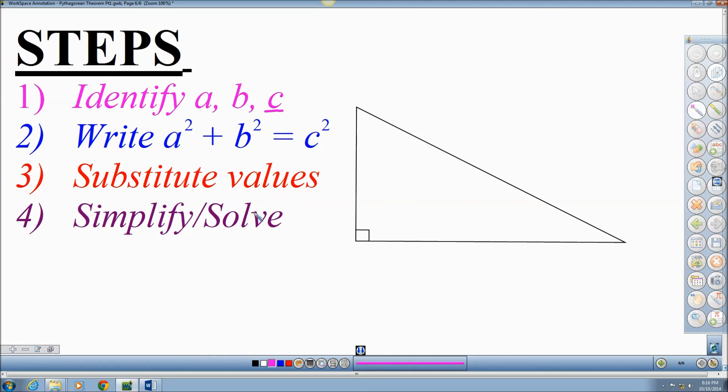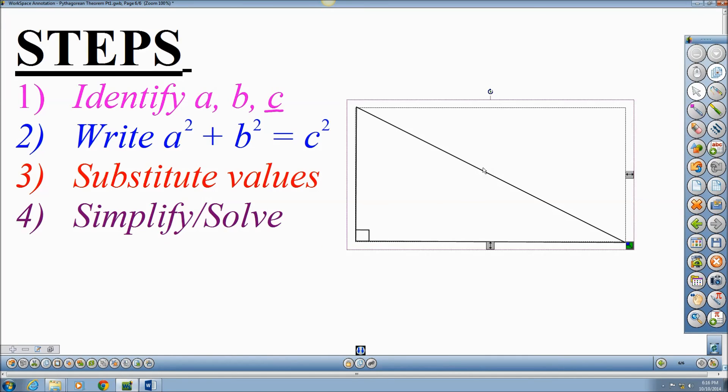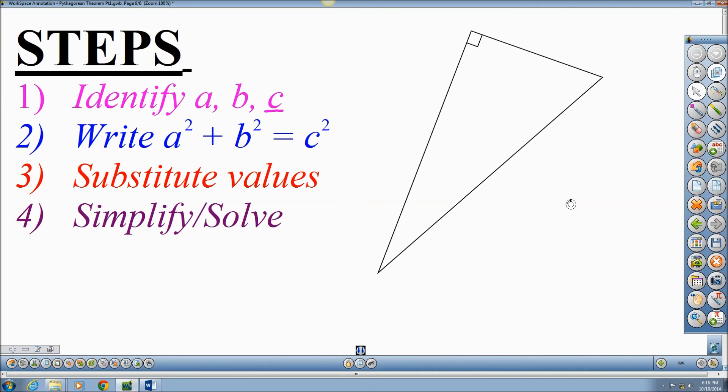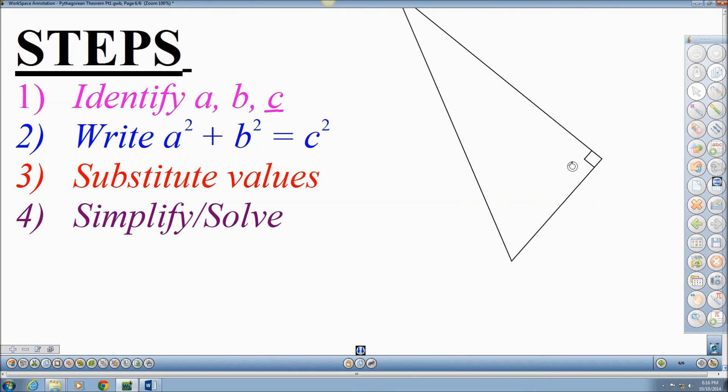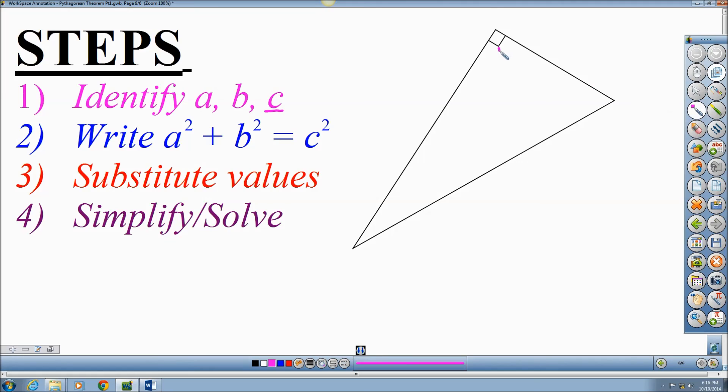Now, one thing that I do want to show you is that it doesn't matter which way this triangle is turned. I can always identify sides A, B, and C. Because the only one that really matters, as I spin it around, is going to be side C. It's always over here. Side A and B don't really matter. They're the legs of the triangle, as always.